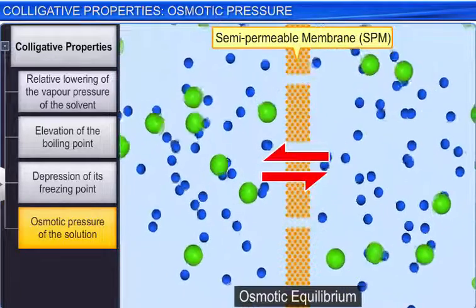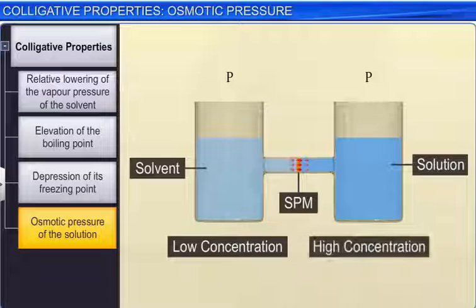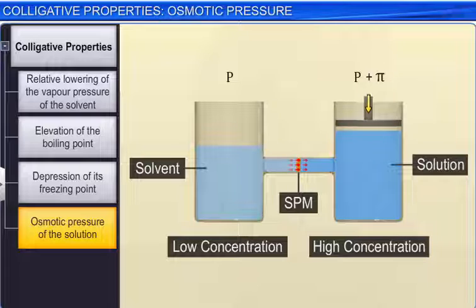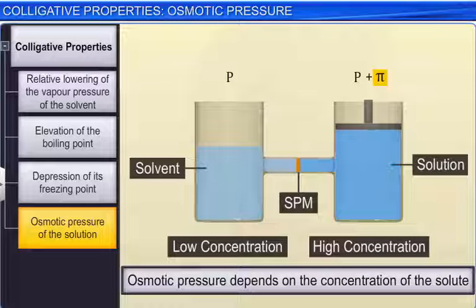The flow of solvent molecules from low concentration to high concentration can be stopped by applying some extra pressure on the high concentration side. The minimum pressure required to do so is known as the osmotic pressure of the solution. Osmotic pressure π of a solution is defined as the excess pressure that must be applied to a solution to prevent osmosis from taking place. Like other colligative properties, it does not depend on the identity of the solute but on its concentration.